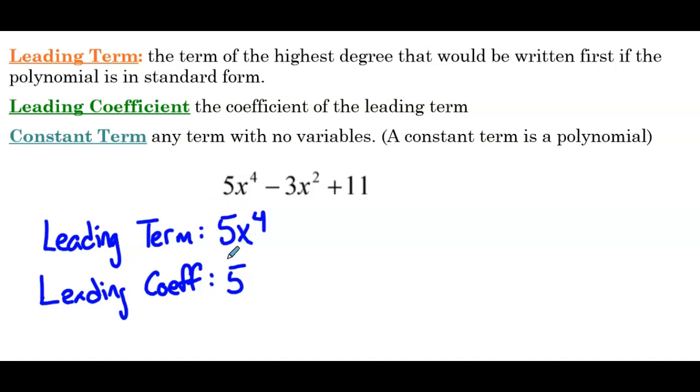Now if there wasn't a number written, if it was just x⁴, the leading coefficient would be 1. And then our constant is 11. Now, every polynomial is going to have a leading term, but not every polynomial has to have a constant. For example, if I had x² + 2x, that's an example of a polynomial without a constant term. So just something to pay attention to.